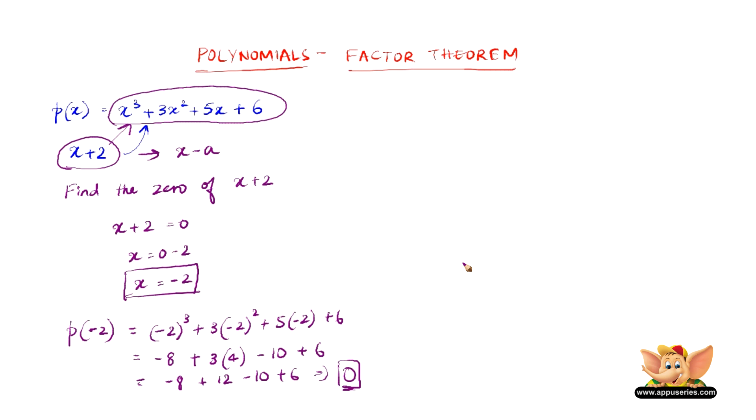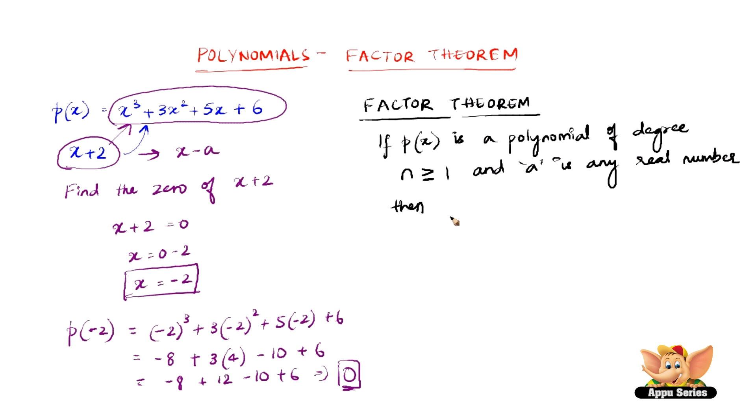So what we can conclude from this is, I'll make a small note here. The Factor Theorem states that if p(x) is a polynomial of degree n ≥ 1 and a is any real number, then x - a is a factor of p(x) if p(a) = 0.